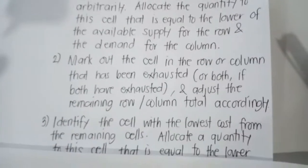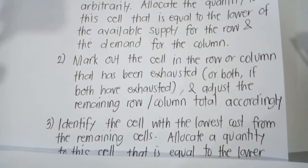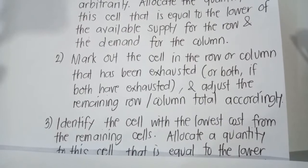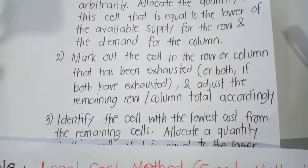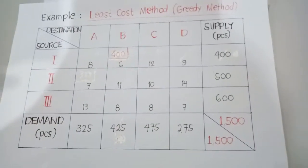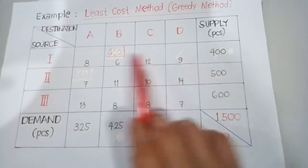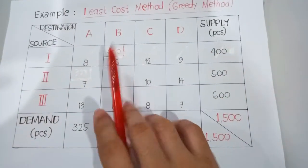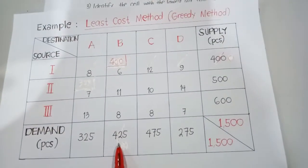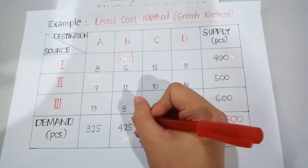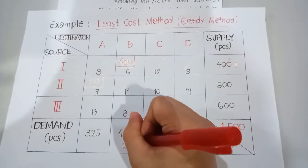Step number two says: mark out the cell in the row or column that has been exhausted, or both if both have been exhausted, and adjust the remaining row or column total accordingly. We have already allocated 400 of our supply, so 400 minus 400 becomes zero, and 425 minus 400 becomes 25 pieces.